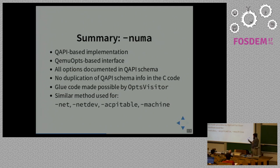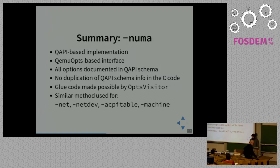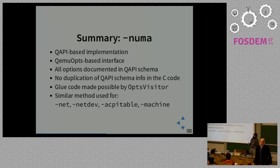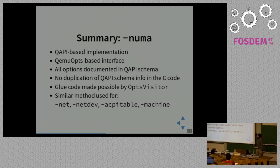Numa is fortunately one case where things are working as they should, because all the options are specified on the QAPI schema with no duplication. This is made possible by the ops-visitor helper. Other command line options that work similarly are dash-net, dash-netdev, dash-acpi-table, and dash-machine. This is an example where QEMU Ops and QAPI work together successfully.